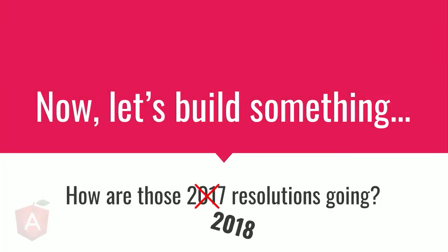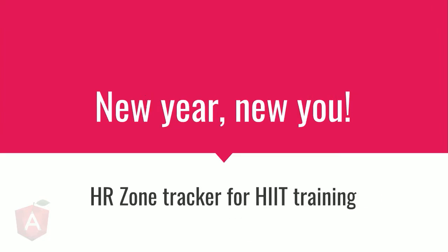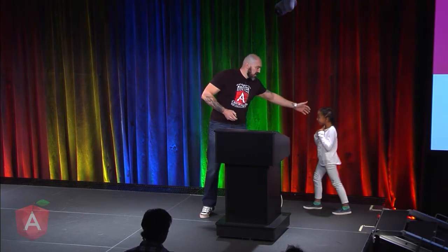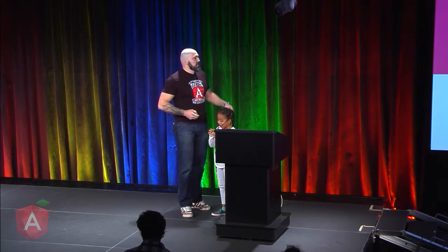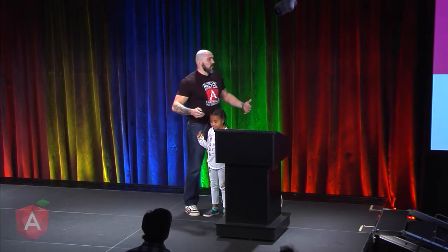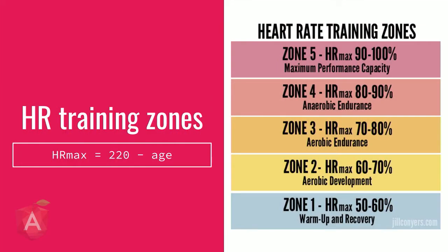Let's build something. So let's talk about 2018 ones — new year, new you, right? I have my daughter here and we'll do a demonstration. What we'll demonstrate is basically how to implement a heart rate zone tracker for high-intensity training. High-intensity training is based on your heart rate. Your heart rate maximum is a basic formula: 220 minus your age. We have five zones of training that give you a color and some indication about how you are working out.